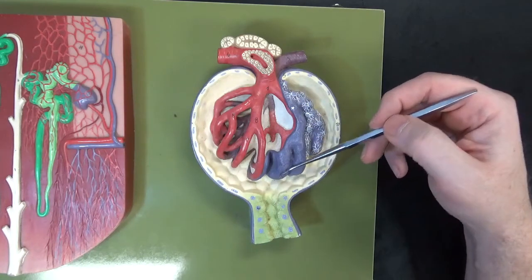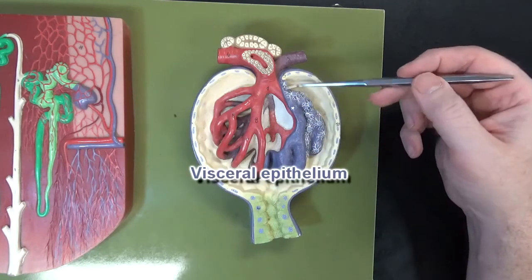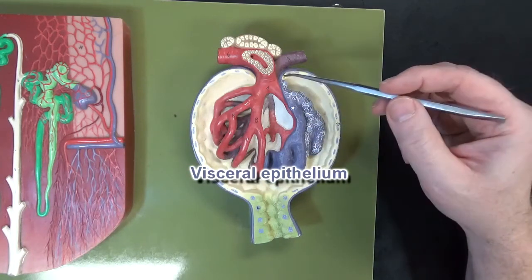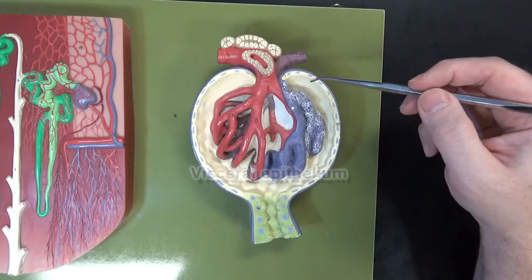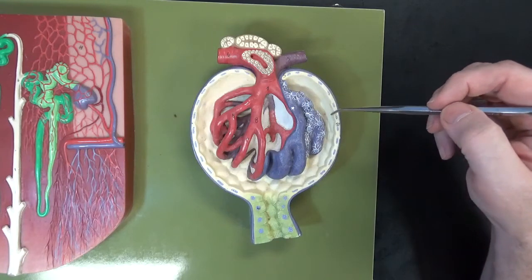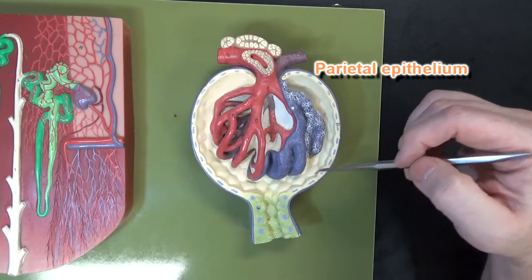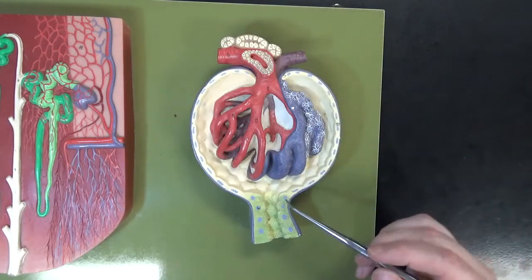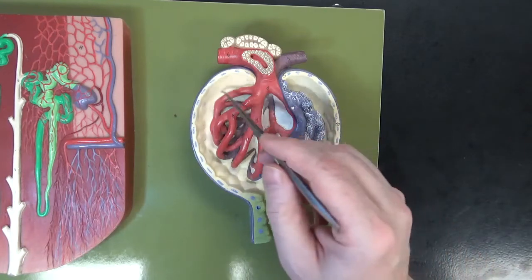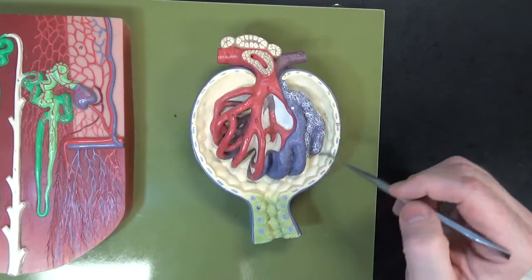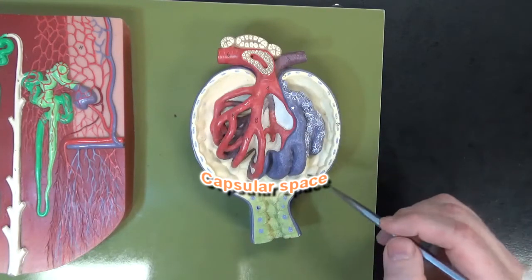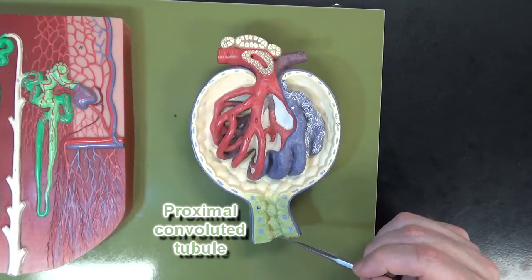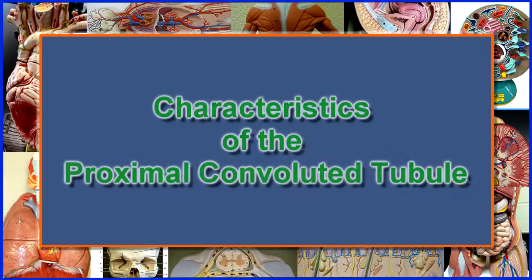These podocytes make up the visceral layer of the glomerular capsule, and the cells on the outside make up the parietal layer, or parietal wall. The filtrate collects in the space between these layers and then gets directed to the proximal convoluted tubule.